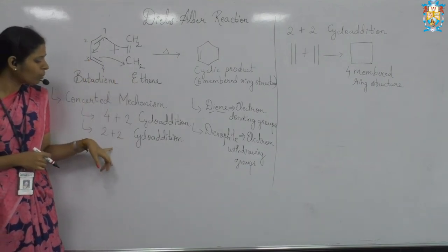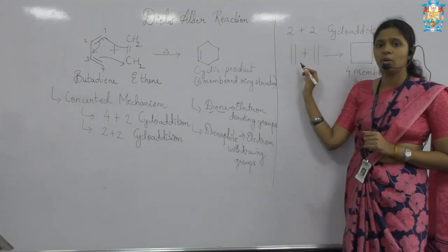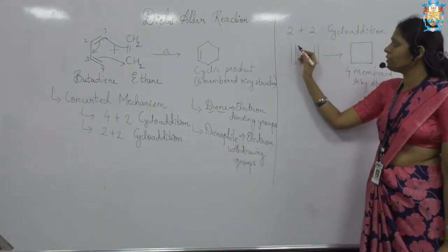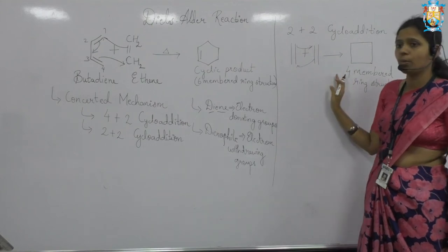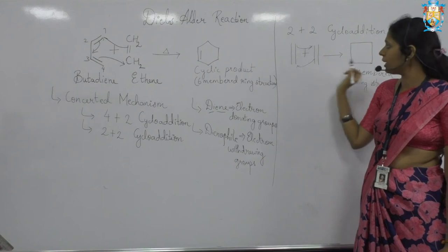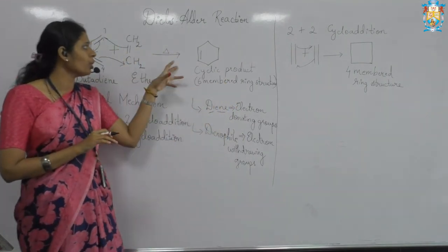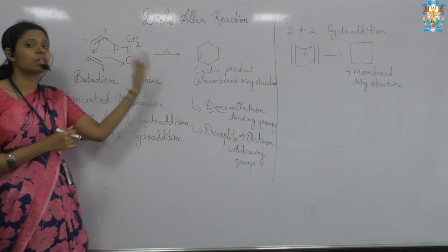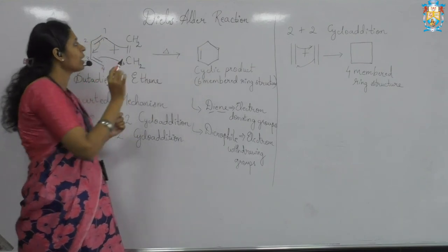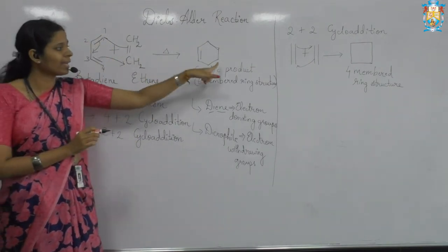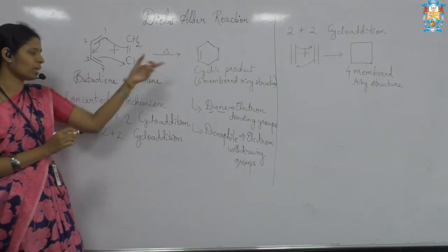Then you have one more type: two-plus-two cycloaddition, wherein you have this molecule. You can see how this molecule is written for two-plus-two cycloaddition. It will give a simple cyclobutane — this electron will shift here, this electron will shift here — and it will form a single-bonded cyclobutane molecule. You can see how the reaction takes place: the double bonds are shifting, forming one ring, and you are getting one double-bond ring, so in this way the product is formed.